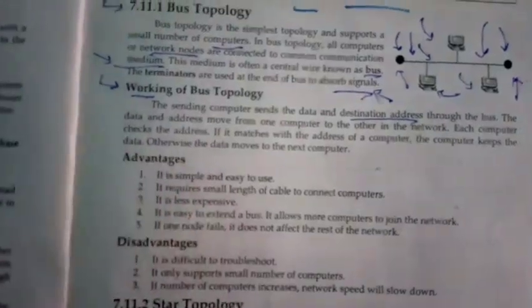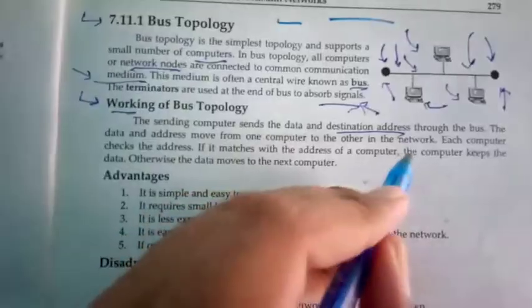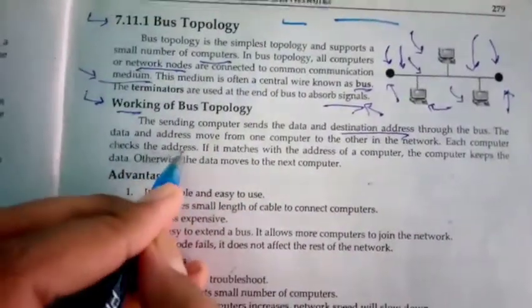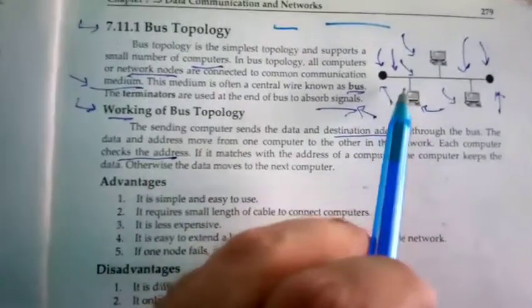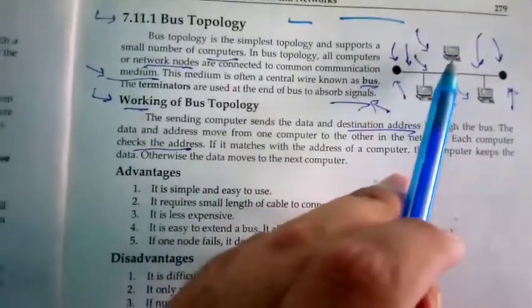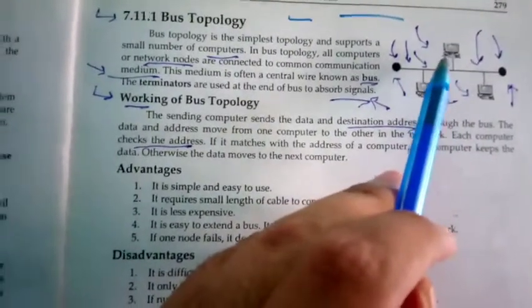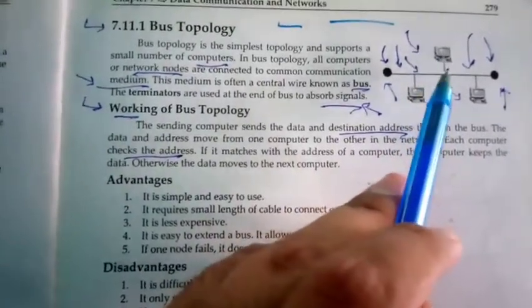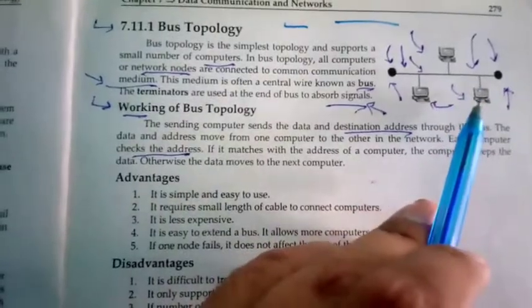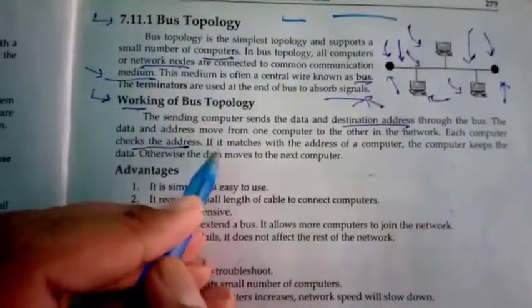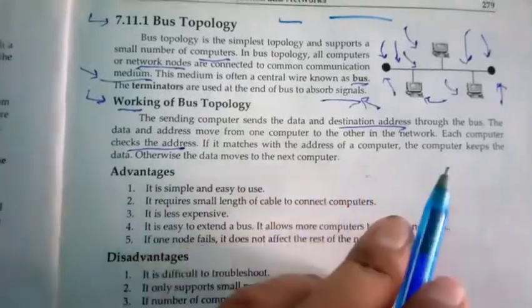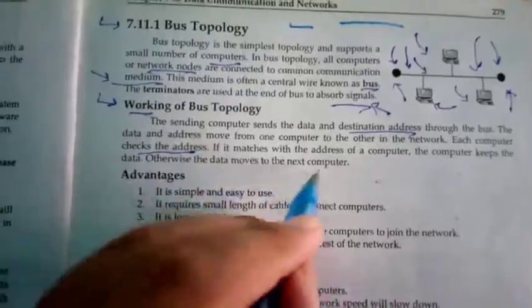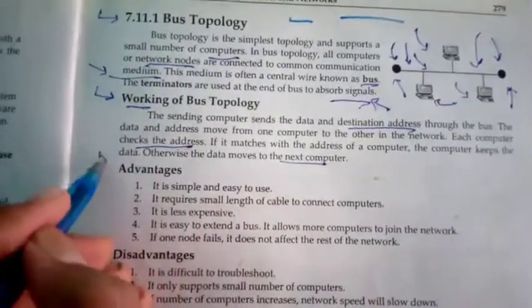address move from one computer to another in the network. Each computer checks the address. The data will go to the first computer. If the address matches, it keeps the data. If the address doesn't match, it goes to the next computer.